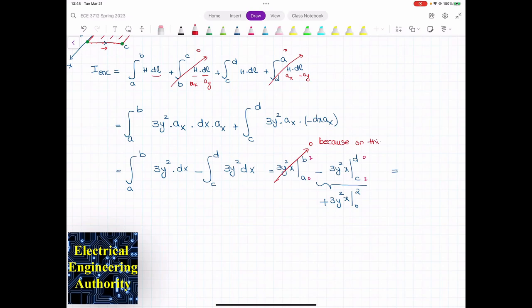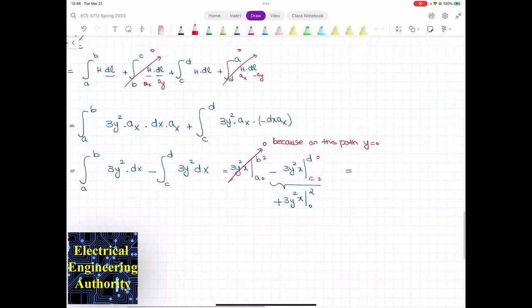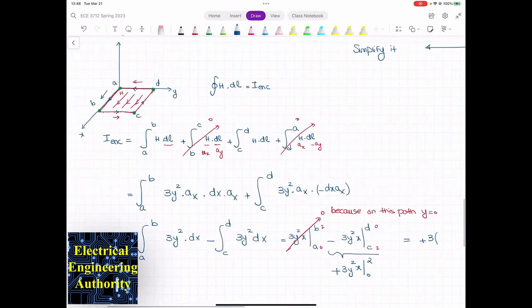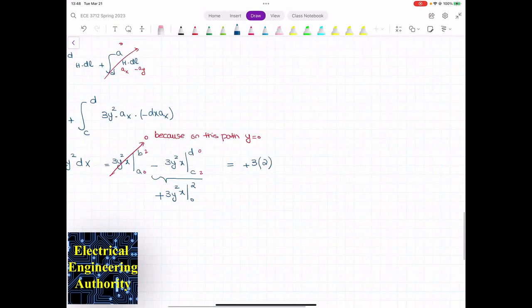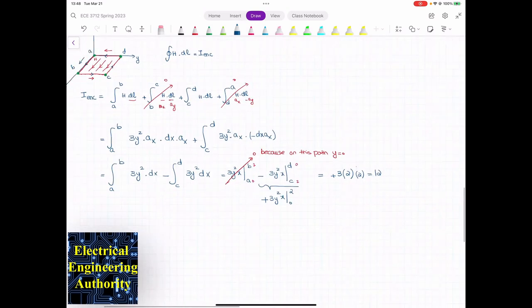Because on this path, y is equal to 0. Therefore, we're left with only the second one. So the second one is positive 3 multiplied by y to the power of 2. Y at this point, when I go from C to D, is equal to 2. So that's 3 multiplied by 2 squared. And then we have an x that changes from 2 to 0. So that makes sense. So you see why I didn't add them, why I just said that it is wrong to add them because they have different ys.